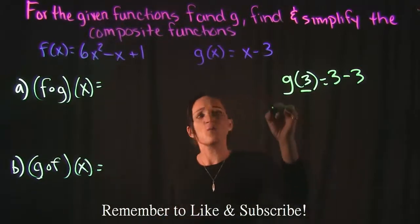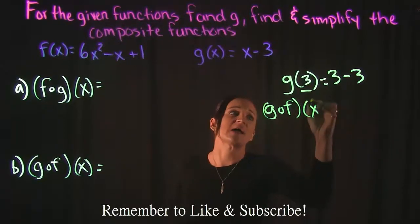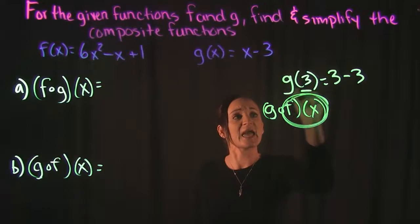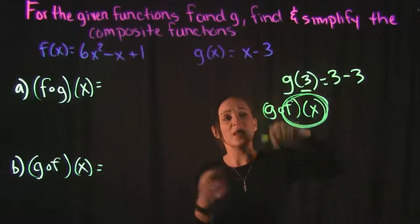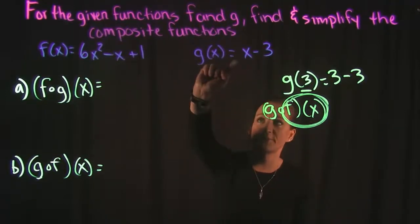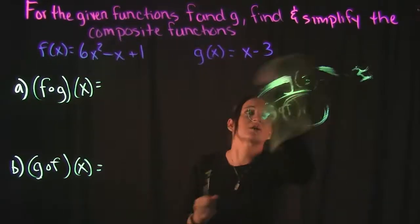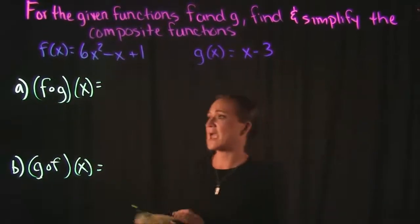So if I wanted to find f of g of x what it's asking me to do is take g of x and plug it in for x into f. I'll elaborate more on that in just a little bit here. So let's start with example a.